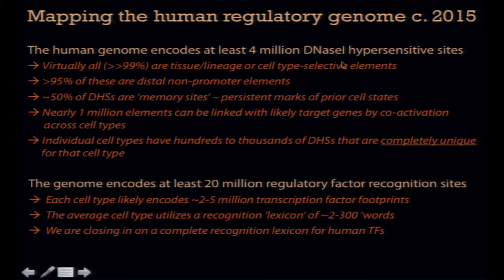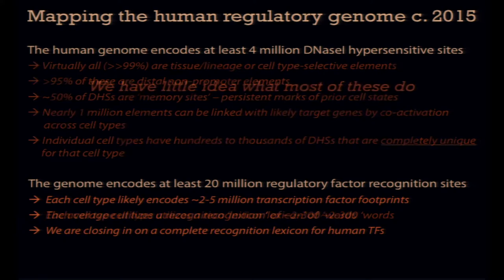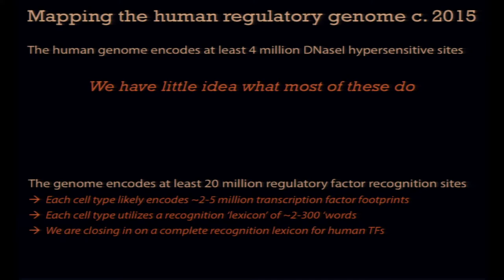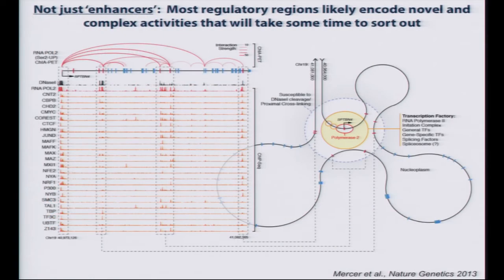Coming back to the general landscape — 4 million sites, roughly 150,000 combinatorially in any given cell type — the big problem is that we have very little idea what most of these sites do. It's definitely not just enhancers, and I think we're doing ourselves a disservice by using that word and thinking about everything as enhancers. Most regulatory regions are likely to encode novel and complex activities that are going to take some time to sort out.